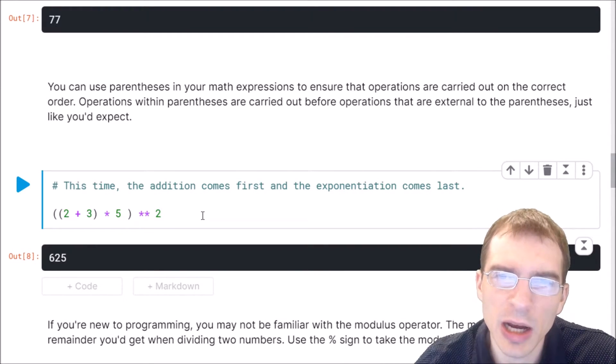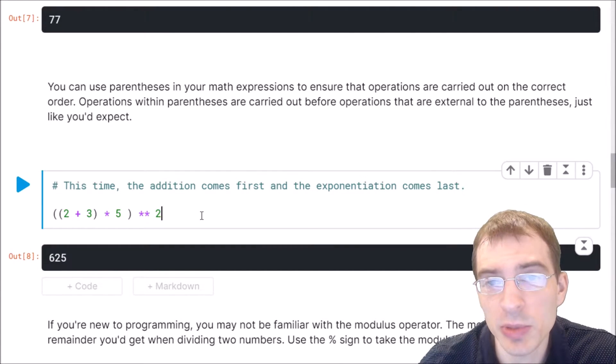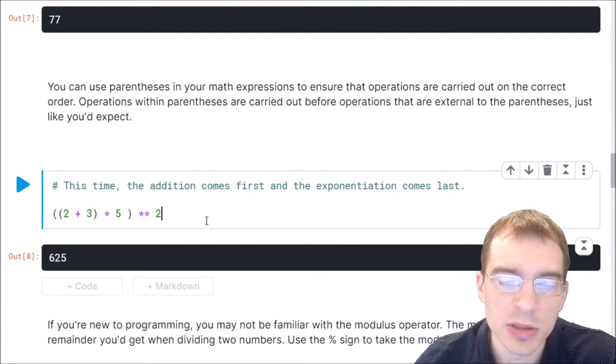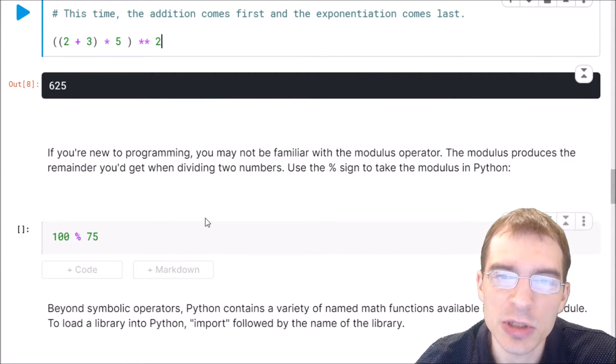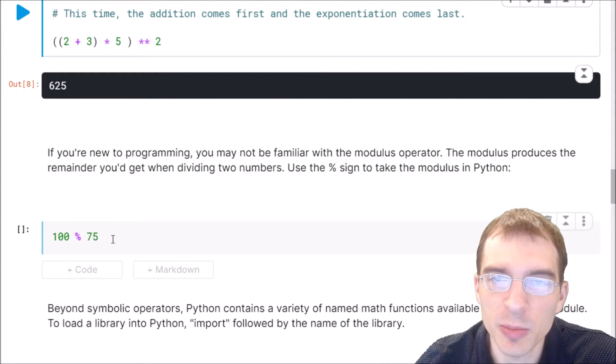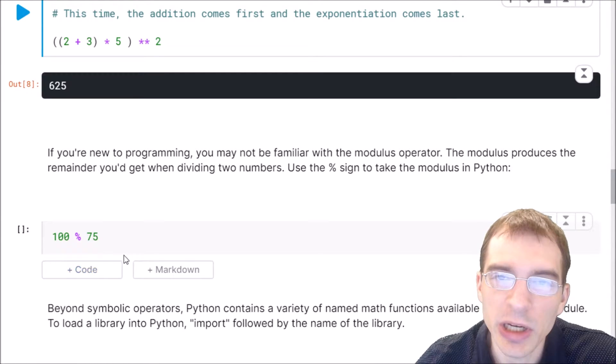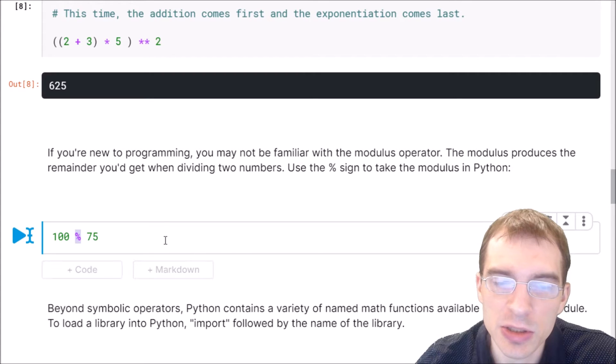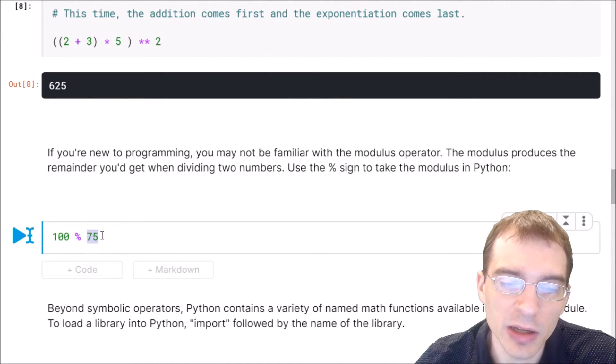Now I'll go over a couple other operators you may be somewhat less familiar with. If you're new to programming, you may not be familiar with the modulus or modulo operator. What it does is it divides a number by some other number and then gives you the remainder of that division. In Python, you use the percent sign to take the modulus. So here we're saying divide 100 by 75, and we want the remainder of that operation. In this case, the remainder is going to be 25.